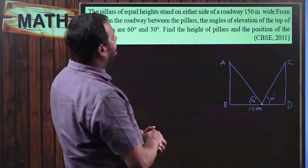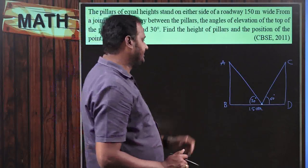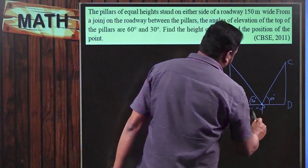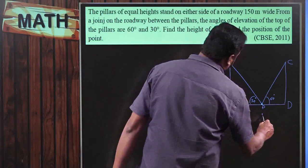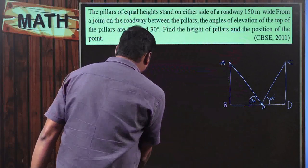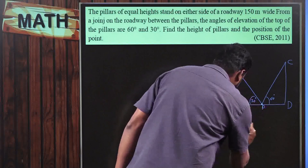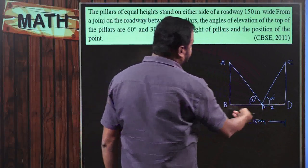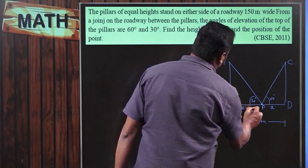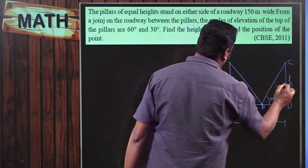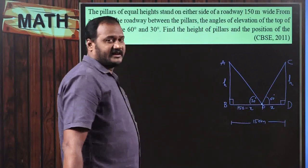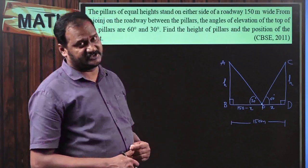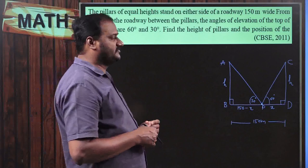Find the height of the pillars and the position of the point P. Let BP = x, so PD = 150 − x. The height of the equal pillars is h. This is a right angle and this is also a right angle. There are two unknowns — x and h — so I will apply trigonometric ratios for both right-angle triangles.